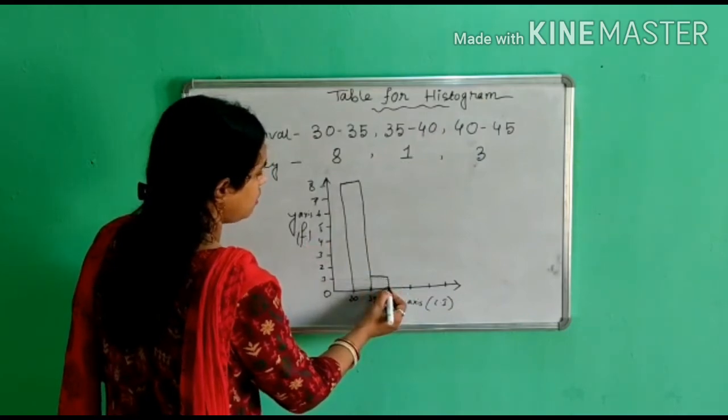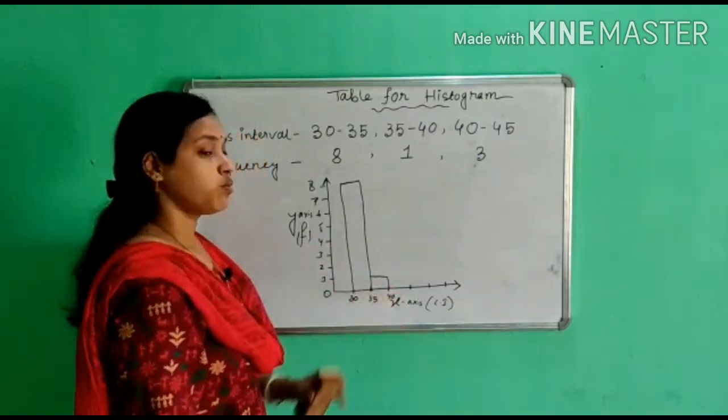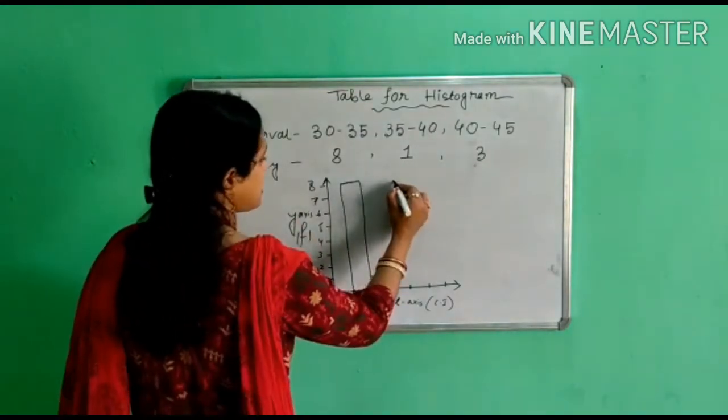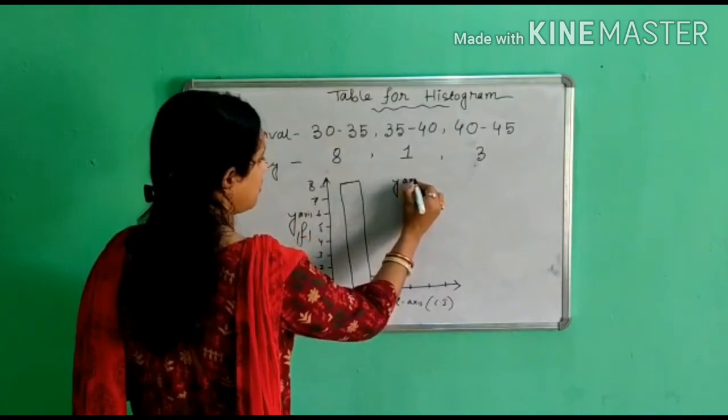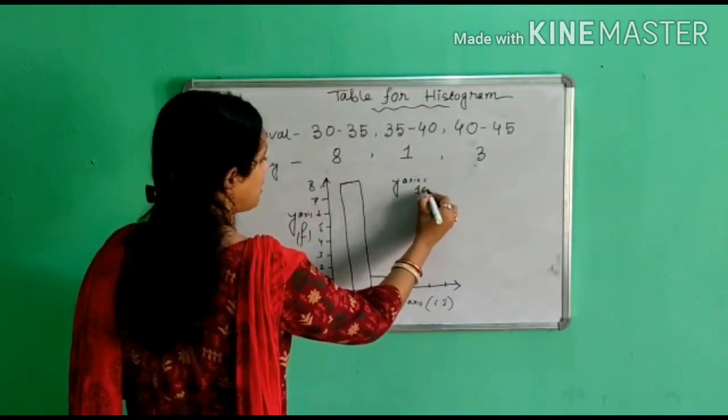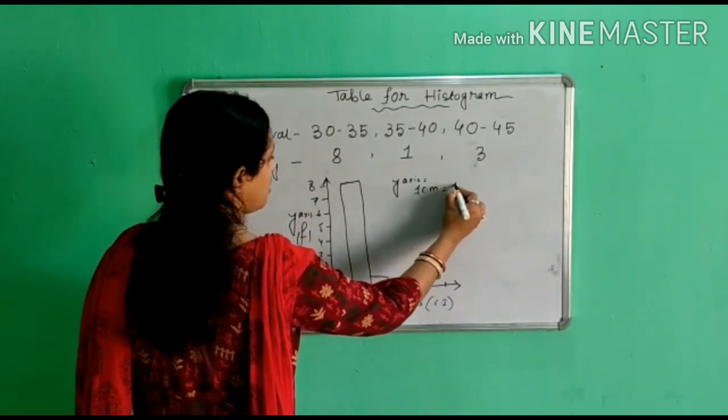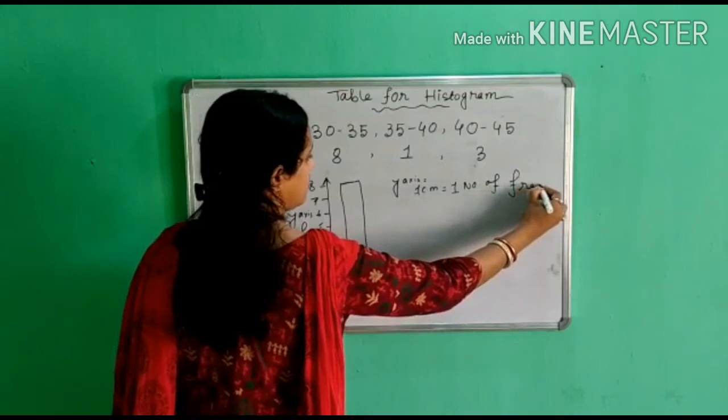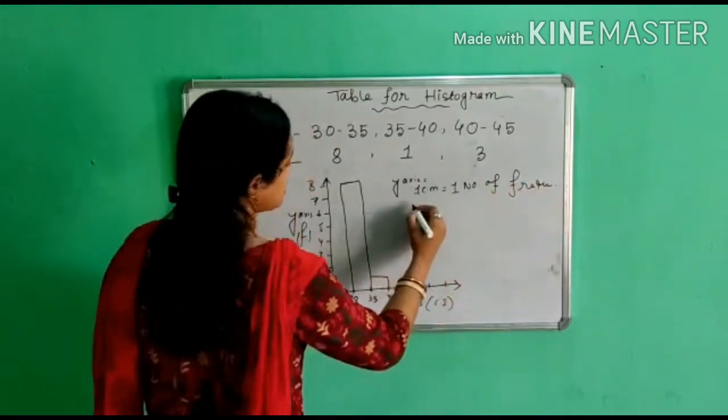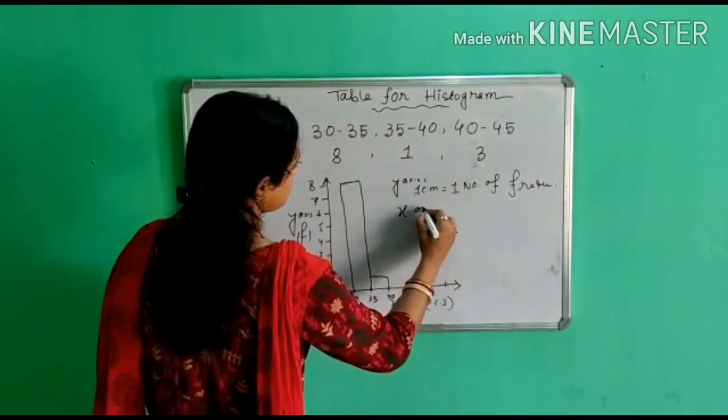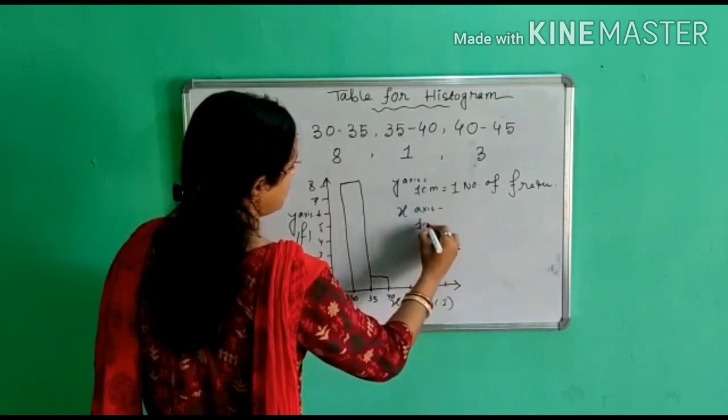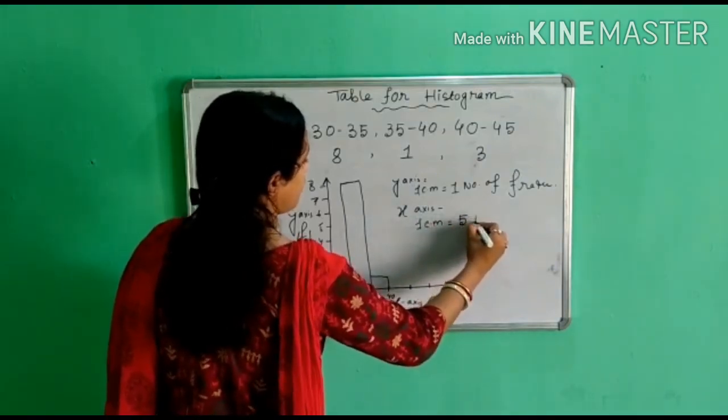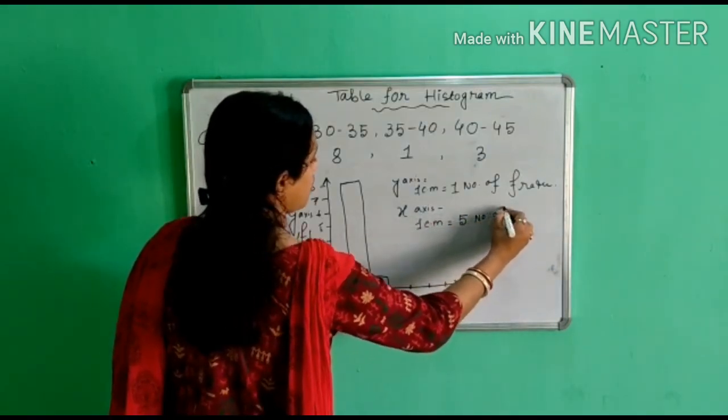Now for y-axis our scale is 1 centimeter represent five number of frequency. Now for x-axis one centimeter represent five number of observation.